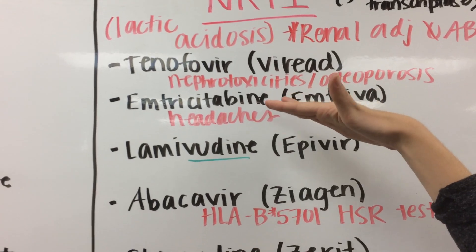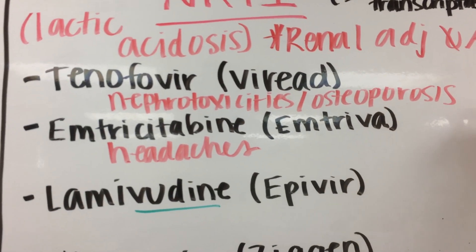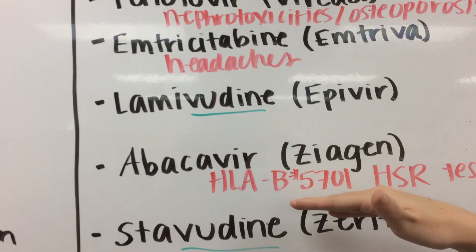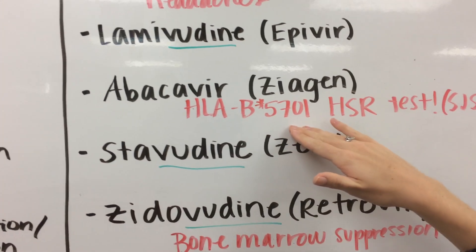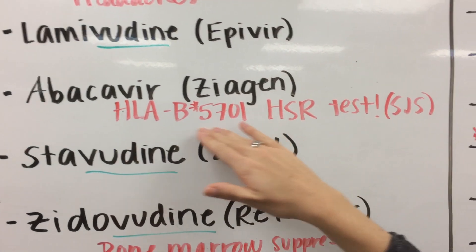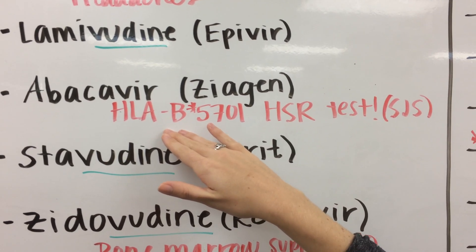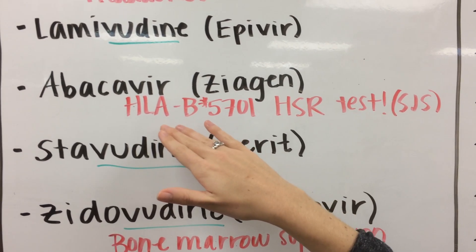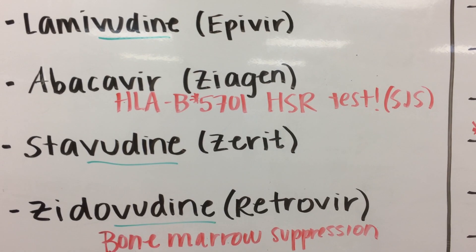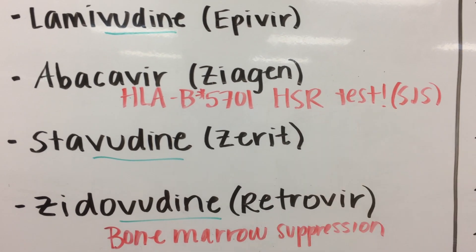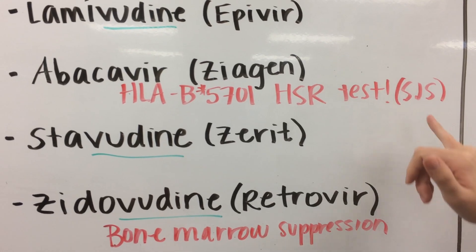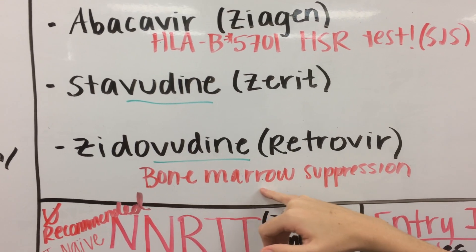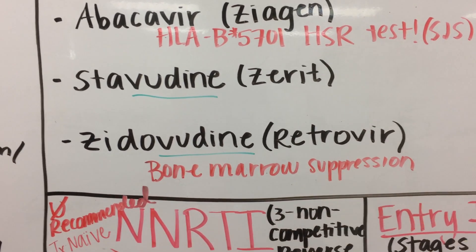Specifically for tenofovir, we think about nephrotoxicity and osteoporosis. For emtricitabine, we think about headaches. For abacavir, it's really important to perform genotype testing — HLA-B*5701. If a patient tests positive, they cannot receive abacavir or any medication containing abacavir, due to hypersensitivity reactions including Stevens-Johnson syndrome. For zidovudine, bone marrow suppression is the specific adverse effect to note.